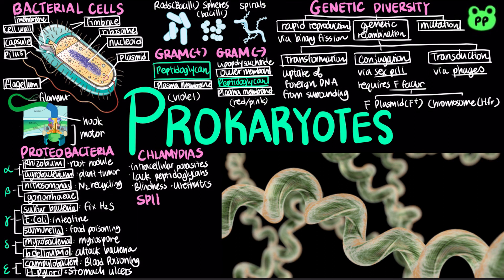Spirochetes are a group of gram-negative heterotrophs that spiral through their environment by means of rotating internal flagellum-like filaments. Many spirochetes are free-living, while others are pathogenic parasites, including species that cause syphilis and Lyme disease.